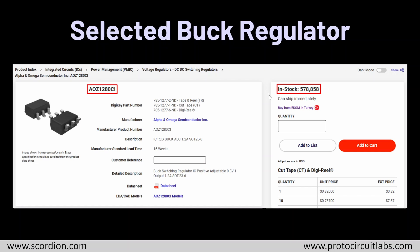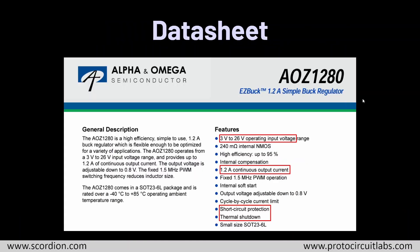The selected buck regulator is this one from Alpha and Omega Semiconductor, which is named the AOZ1280. It has a large amount of stock so I won't mind out-of-stock issues. This is the datasheet for this buck regulator and it says it's a 1.2 ampere simple buck regulator with features that match our requirements.